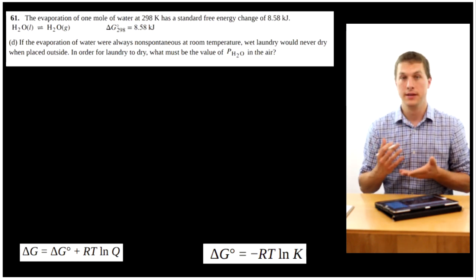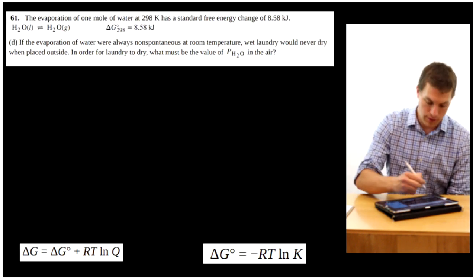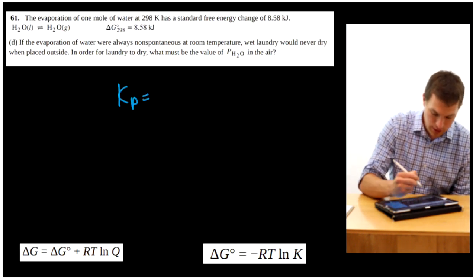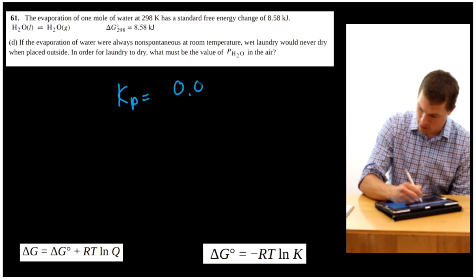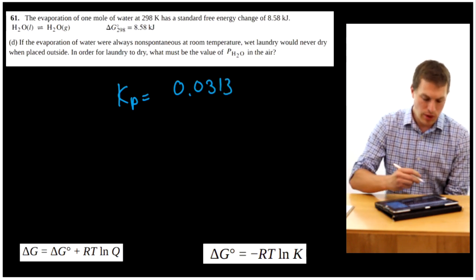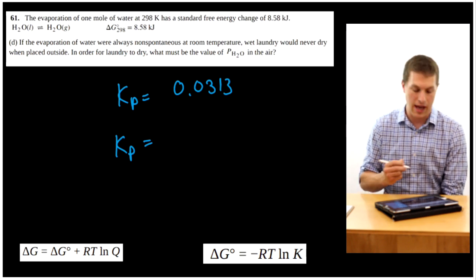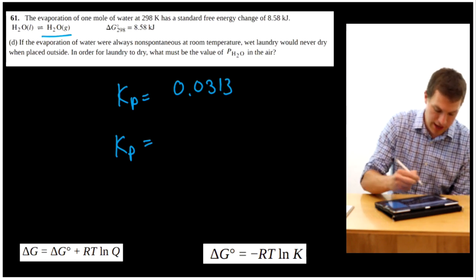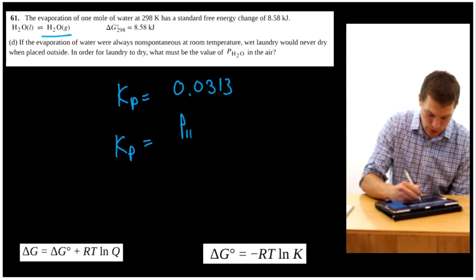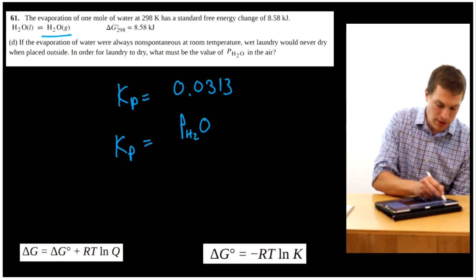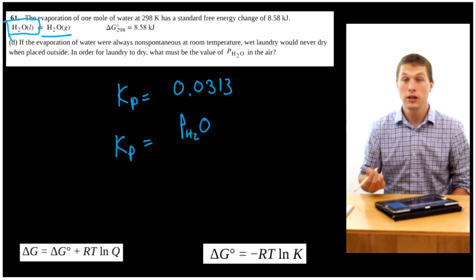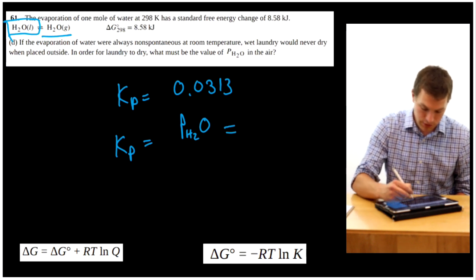And that actually depends on our equilibrium constant, which we just calculated, right? We found that Kp equals 0.0313. Now, what's Kp equal to? It's equal to the pressure of my products over reactants. And here I have H2O gas, so pH2O goes up top. And on bottom, I don't have anything, because that's a liquid. So Kp is just equal to my pressure of H2O, which is equal to 0.0313. In this case, the units are ATM.